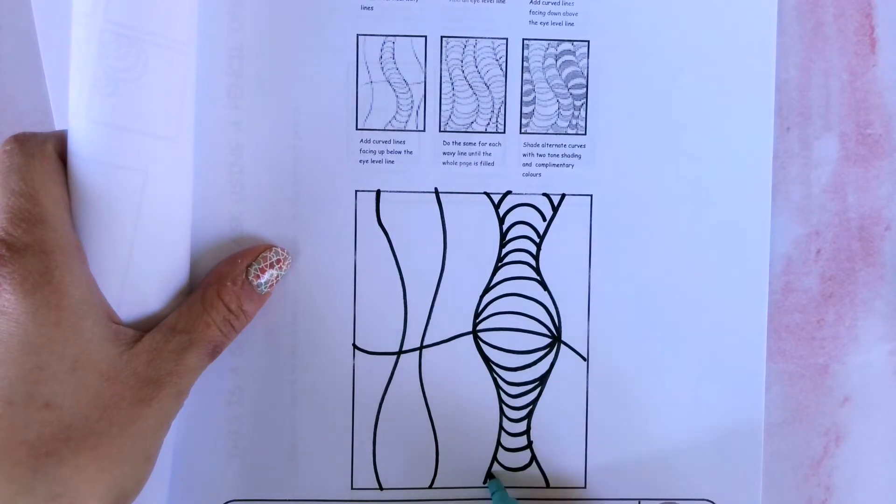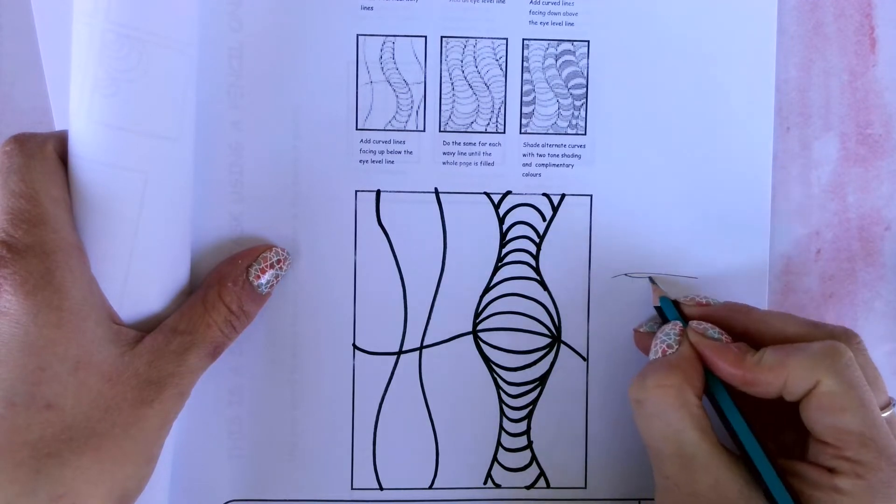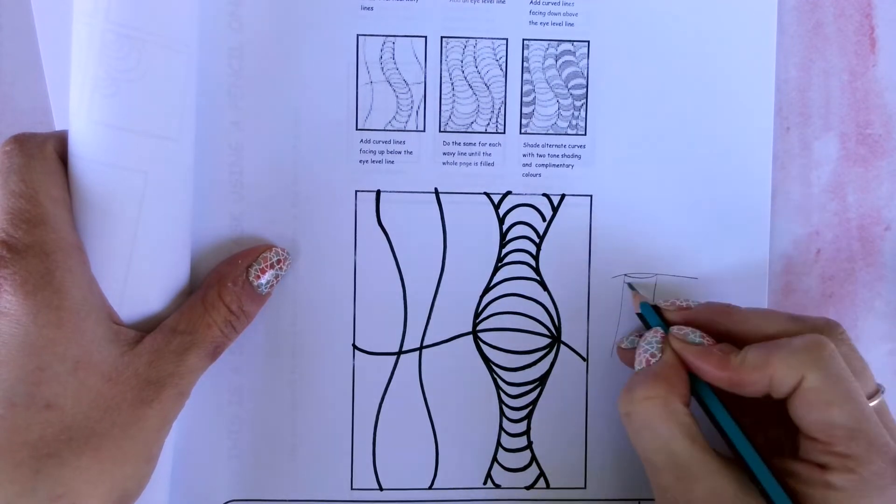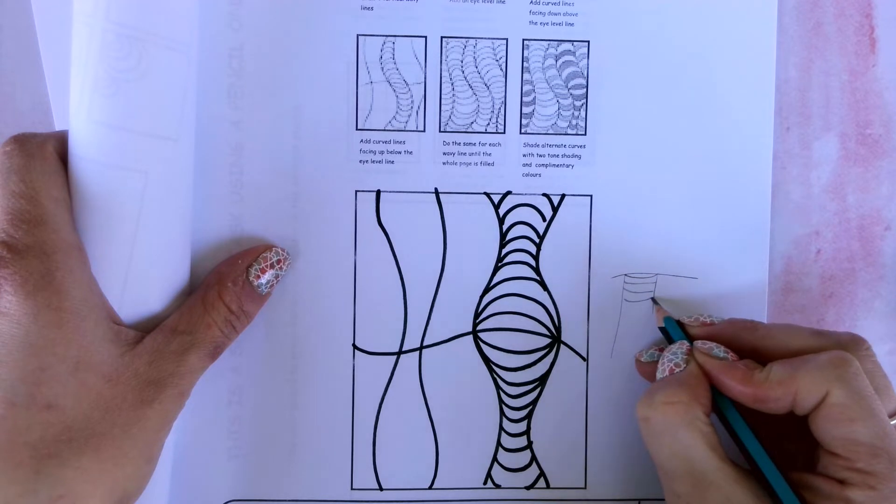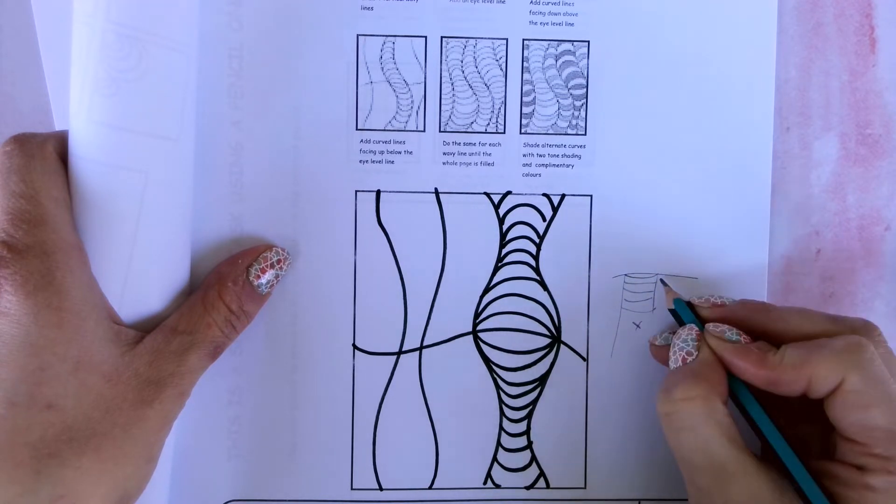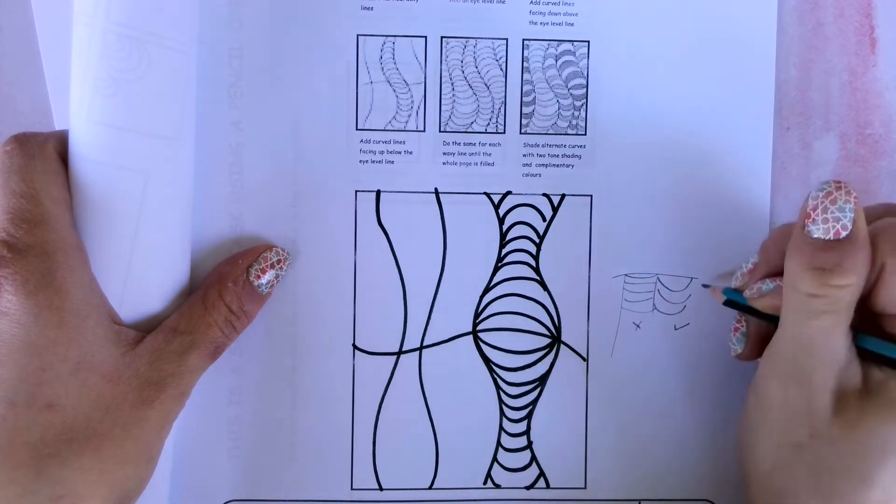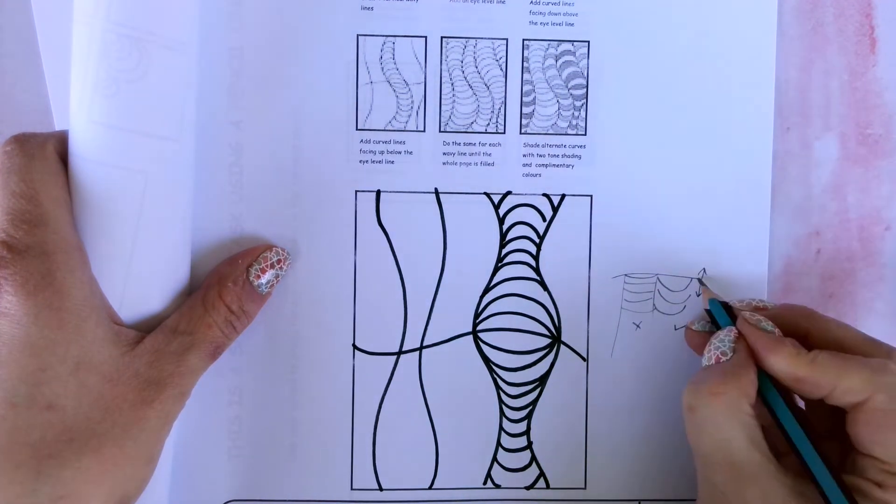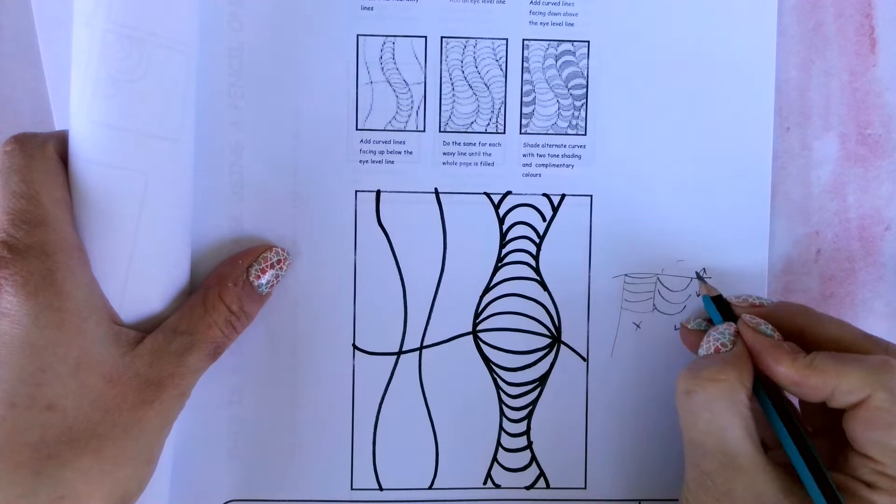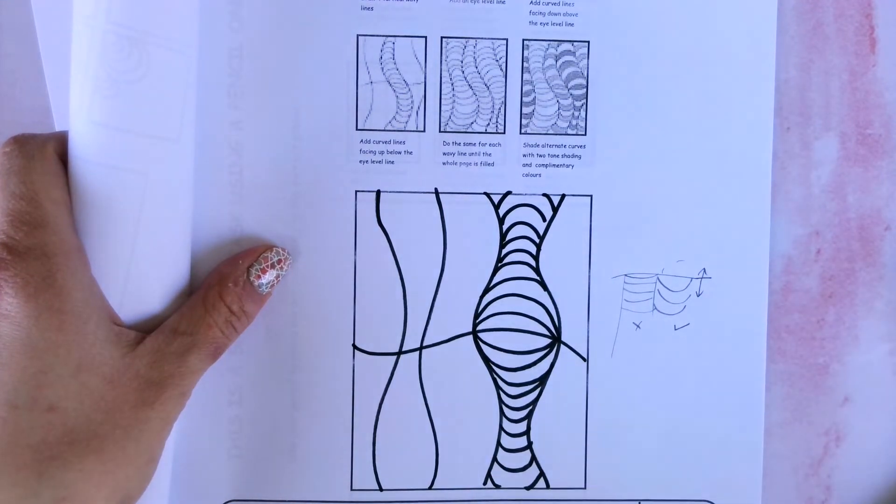And make sure they are quite curved. I've seen many submissions where the lines are quite straight from some students. That way you don't get very much of an optical illusion effect. So try and make sure that the lines are curved and going away from the eye line, so you get a nice arc in your work.